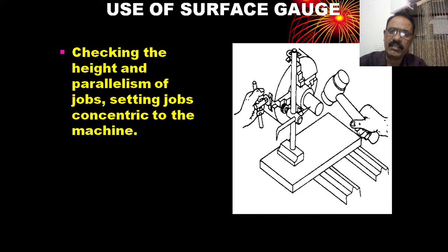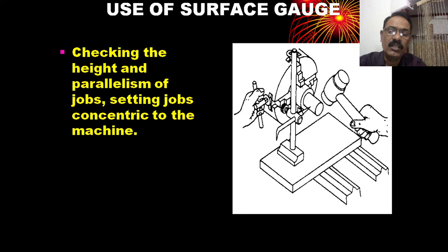The surface gauge is used to set the job on the machine table, and also it is used for setting the job concentric to the machine, and which is used for checking the height and parallelism of the jobs.